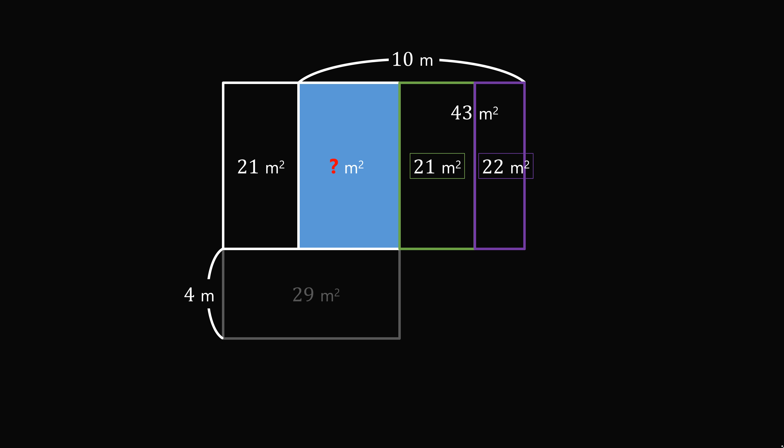Now let's disappear the rectangle in the second row, and focus on this rectangle, which has dimensions of 10 by 4. This rectangle's area will be equal to 40 meters squared. Now let's reappear the 29 meters squared rectangle, and shift it over to the 40 meters squared rectangle. The area that remains will be 40 minus 29, which is equal to 11 meters squared.